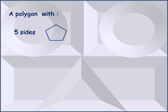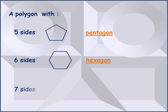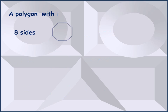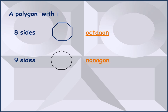A polygon with five sides is called a pentagon, six sides is called a hexagon, seven sides is called a septagon, eight sides is called an octagon, nine sides is called a nonagon, and ten sides is called a decagon.